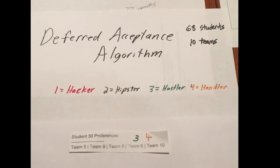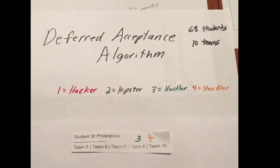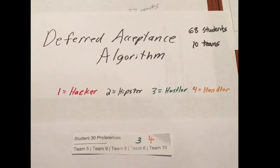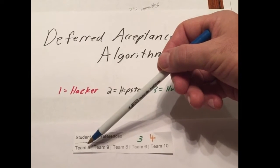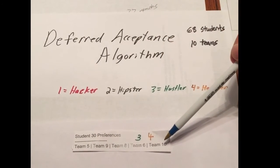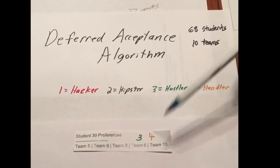Next, we create slips for each student indicating both their preferred teams in order. In this case, Student 30 prefers Team 5 as their highest ranked team, all the way down to Team 10 as their lowest ranked team.